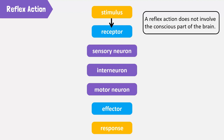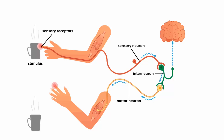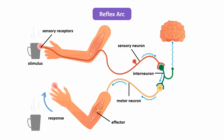The receptors in the body detect a stimulus. A sensory neuron sends electrical impulses to an interneuron, which is located in the spinal cord of the central nervous system. Interneurons connect sensory neurons to motor neurons. A motor neuron sends electrical impulses to an effector. The effector produces a response. For example, when you held the hot cup of coffee, a stimulus was detected by your sensory receptors. The sensory neurons send impulses to an interneuron. The interneuron connects the sensory neurons to the motor neurons. The motor neuron sends an impulse to an effector and you drop the hot cup of coffee as a response. This pathway of transmission of impulse is called a reflex arc.